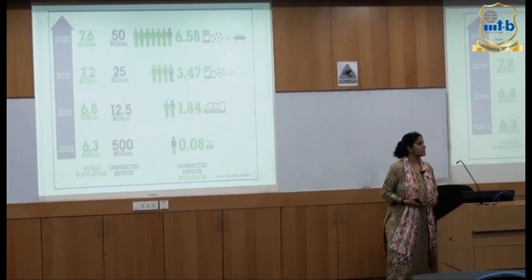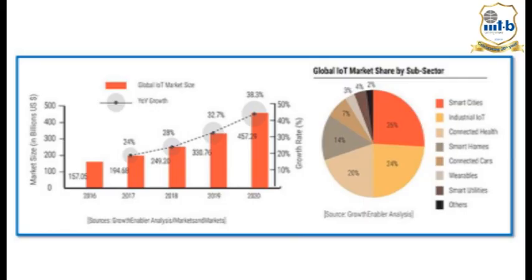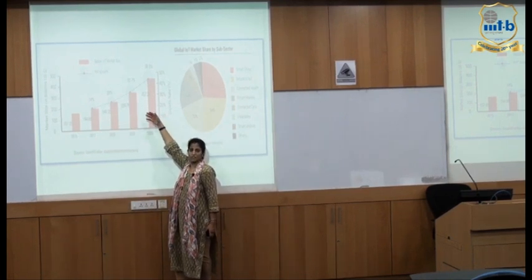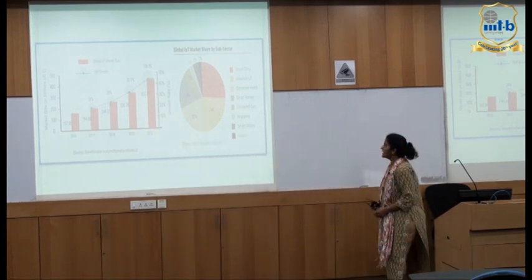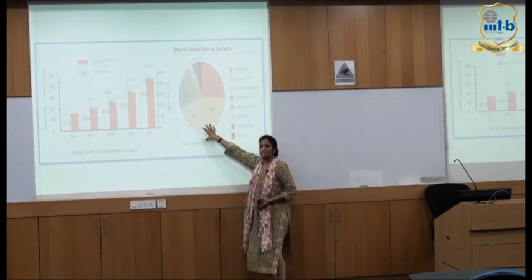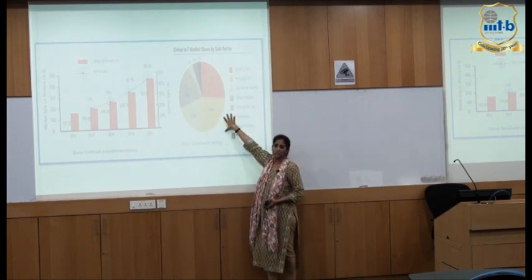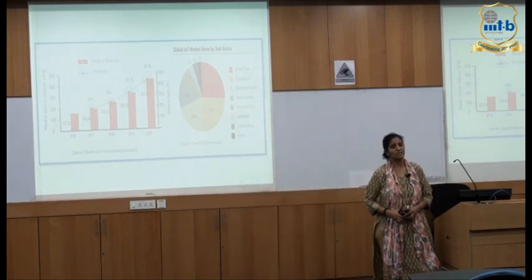Another infographic shows the market size in billions of US dollars, again with an exponential trend. The dashed line shows year-on-year growth in the number of smart devices. The right side shows application domains: about 26% — roughly a quarter of smart devices — are in the smart city domain.